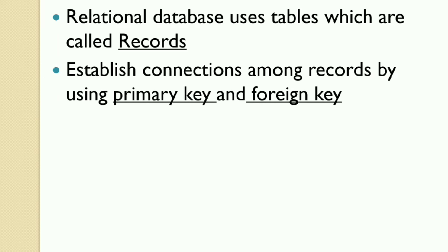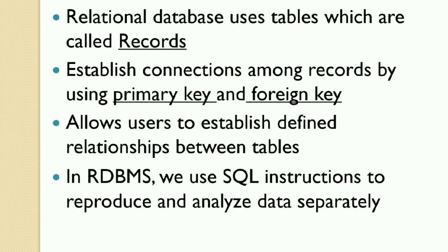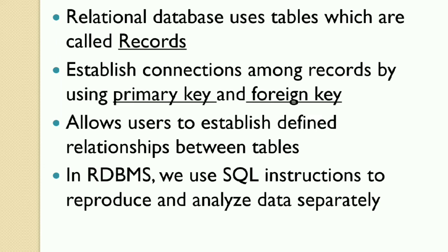Working with relational databases. Relational database uses tables which are called records. These records possess many columns with different names and data types. We can then establish connections among records by using primary key and foreign key to identify table schema relationships. RDBMS allows scalability based on the server distribution rather than Excel. Excel has limited amount of rows and columns. It also allows users to establish defined relationships between tables.